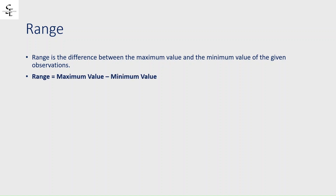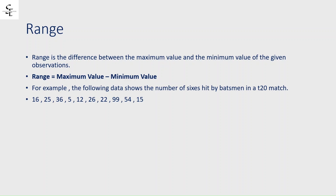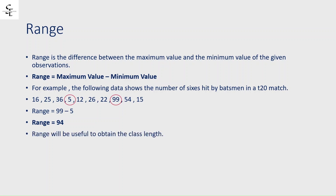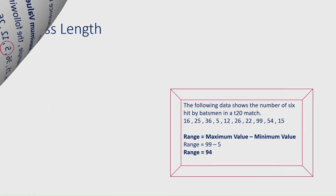Now let's move on to range. Range is the difference between the maximum value and the minimum value of the given observations. The formula is: range = maximum value − minimum value. For example, the following data shows the number of sixes hit by a batsman in a T20 match. The maximum value is 99 and the minimum value is 5, so range = 99 − 5 = 94. Range will be useful to obtain the class length.